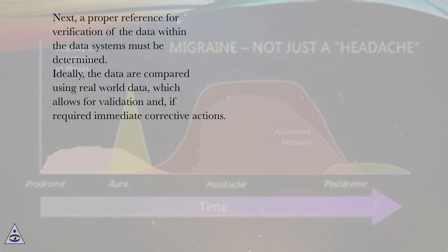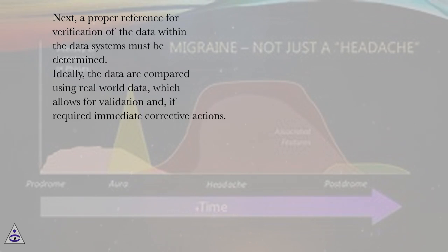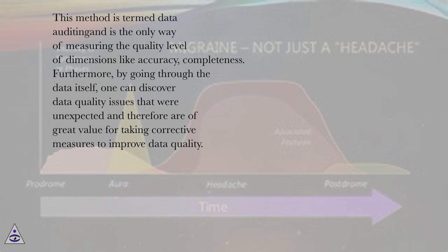Next, a proper reference for verification of the data within the data systems must be determined. Ideally, the data are compared using real-world data, which allows for validation and, if required, immediate corrective actions. This method is termed data auditing and is the only way of measuring the quality level of dimensions like accuracy.